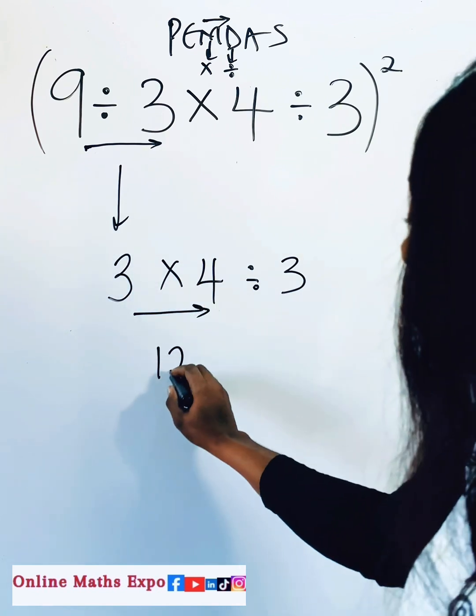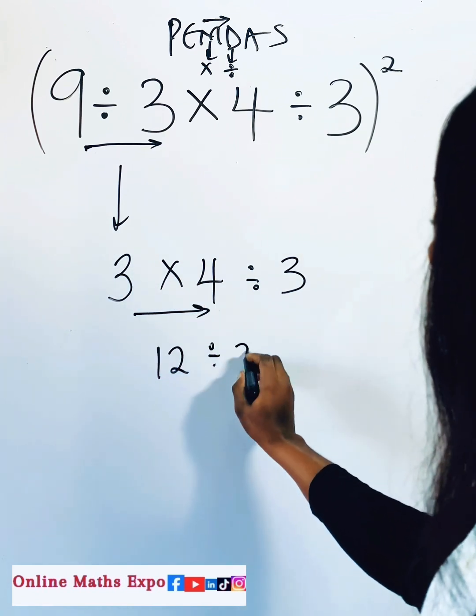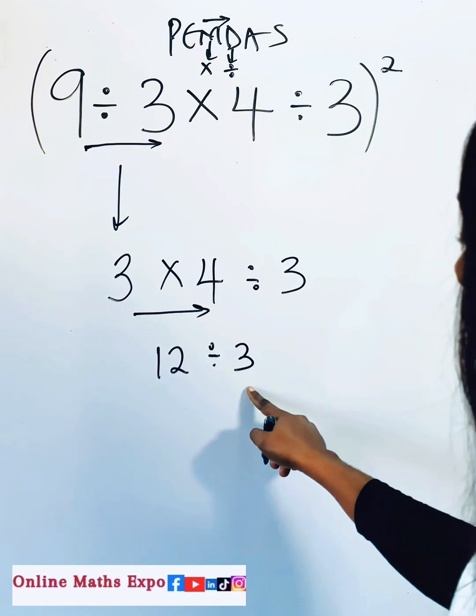3 times 4 will give us 12, then divided by 3. So now we can do this.